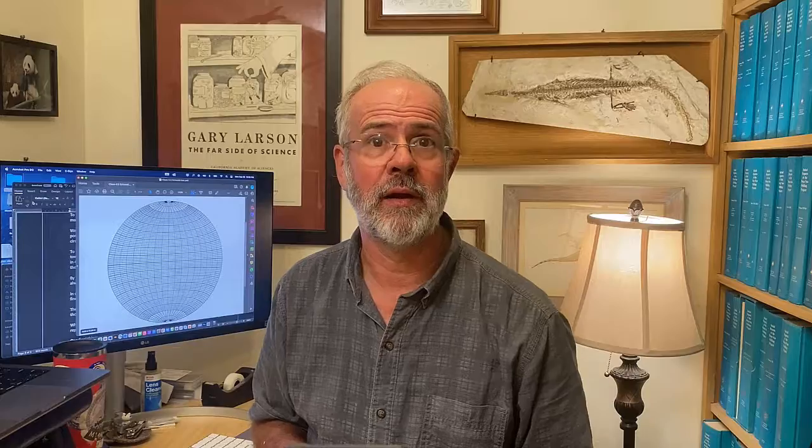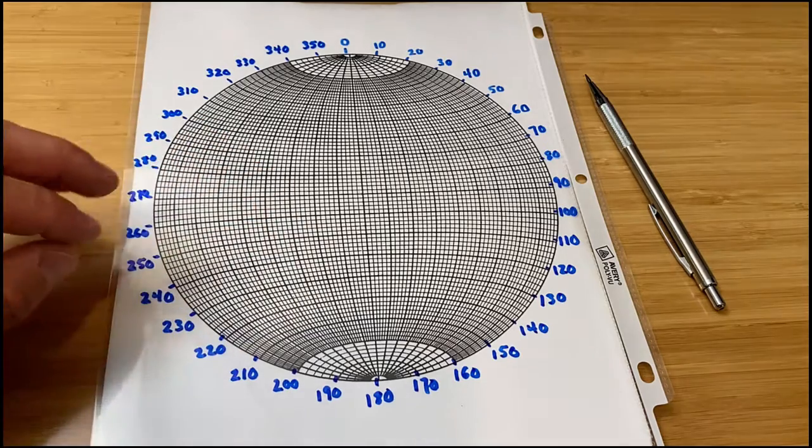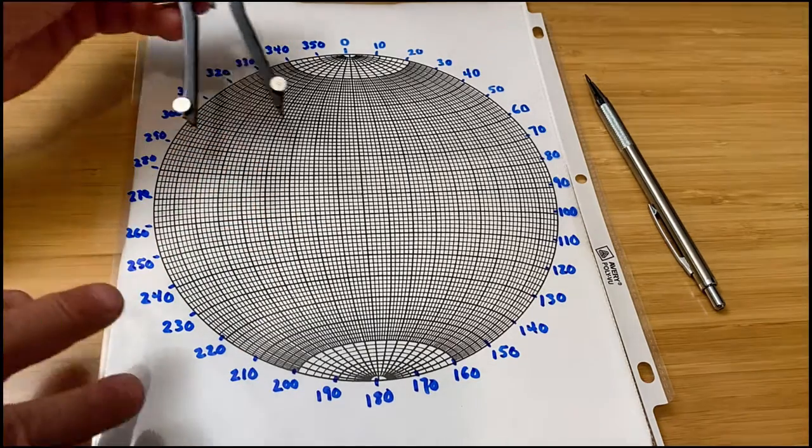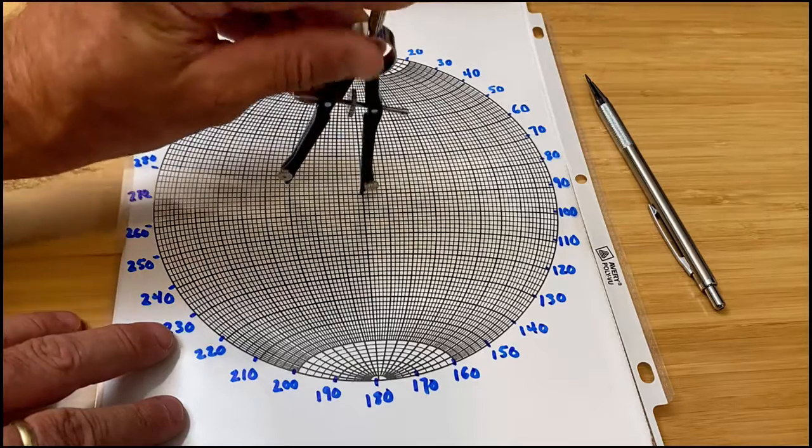There are programs that will do the plotting for you such as something called Stereonet, it's freeware, but we can also do this manually with a paper stereonet. Here I have a stereonet that I have laid a piece of plastic over. I use a pin in the middle to hold the two together or a protractor like this one to anchor the plastic sheet to the stereonet.